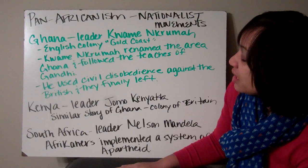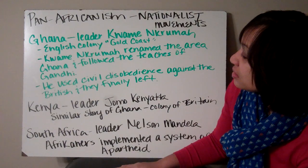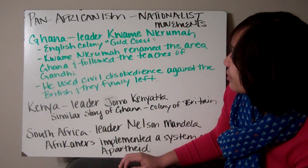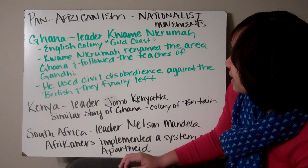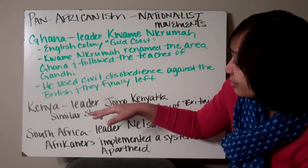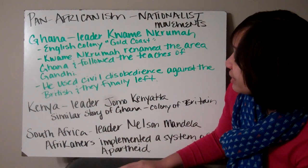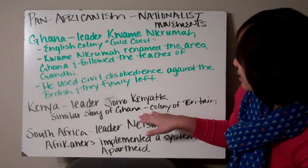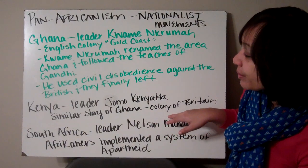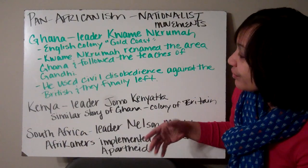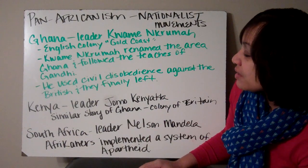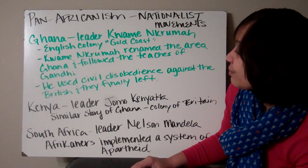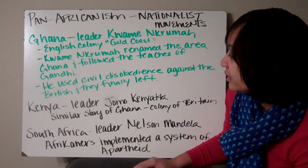Another country in Africa is Kenya. The leader of their nationalist movement was Jomo Kenyatta. It was a similar story to Ghana — it was a colony of Britain and they wanted their freedom. They used nonviolent protest to get it, and Britain finally left Kenya.